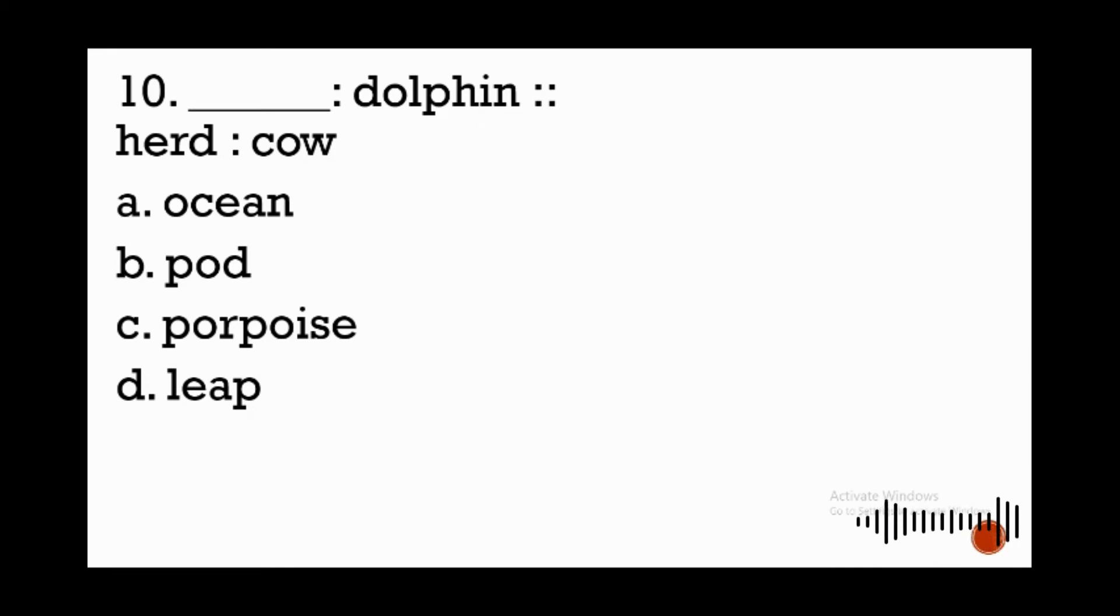The answer is letter B. A pod is a group of dolphins, and a herd is a group of cows.